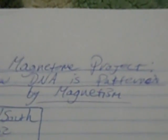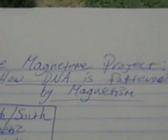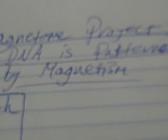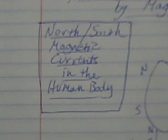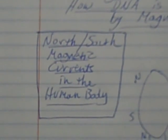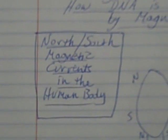This is a new video, again based on magnetism, and it's entitled The Magnetome Project: How DNA is Patterned by Magnetism. It's showing the flow of north and south magnetic currents in the human body.